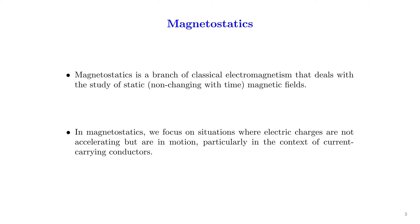Magnetostatics is a branch of classical electromagnetism that deals with the study of static magnetic fields. By a static field, we mean that the field is not changing with time. Magnetostatics deals with the interplay between current and the magnetic field. We focus on situations where electric charges are in motion but they are not accelerating, particularly in the context of current-carrying conductors.